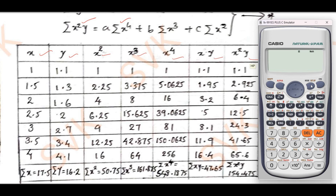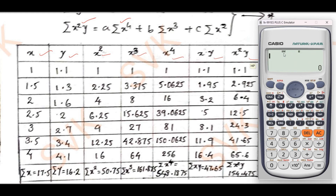First, clear all memory, then press Setup. You will see a word called 'STAT' — press number 3. In the display, press CSE to get 'Statistics.' Once you have this display, press Shift 1. It will ask for the type of equation. Press 1, then select A x² + B x + C, which is equation number 3 — press 3. After clearing memory, press equal to confirm.